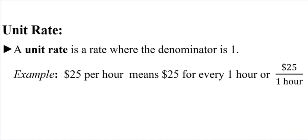Let's review what a unit rate is. It's the kind of rate where the denominator is 1. $25 per hour means $25 for every 1 hour, or $25 over 1 hour written as a fraction.